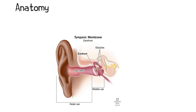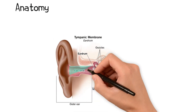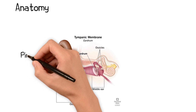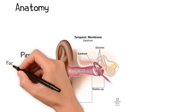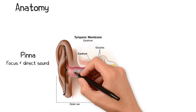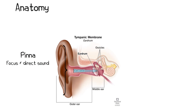The ear consists of the external, middle, and inner ear. The external ear describes the pinna, external auditory canal, and the lateral surface of the tympanic membrane. The pinna is shaped to focus and direct sound energy down the external auditory canal and to the tympanic membrane.